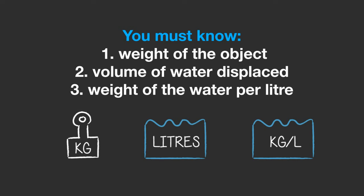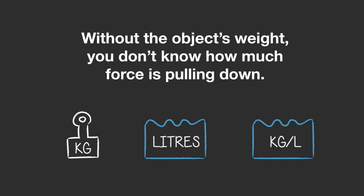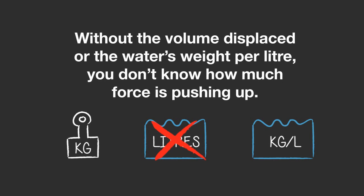You must know the weight of the object, the volume of the water displaced, and the weight of that water to be able to work out the buoyancy of an object. If you are missing any of these three pieces of information you cannot work it out. If you don't know the weight of the object, you don't know how much force is pulling it down. If you don't know the volume of the water displaced or the weight of that water, you don't know how much force is pushing the object up.